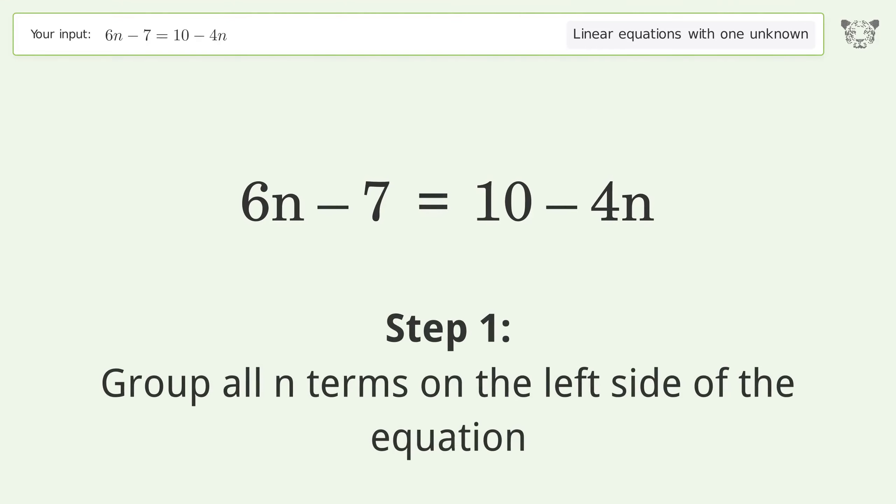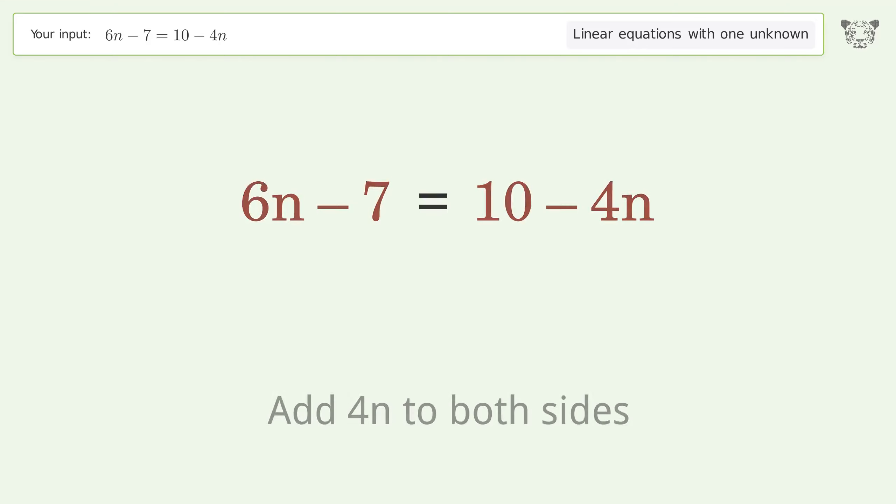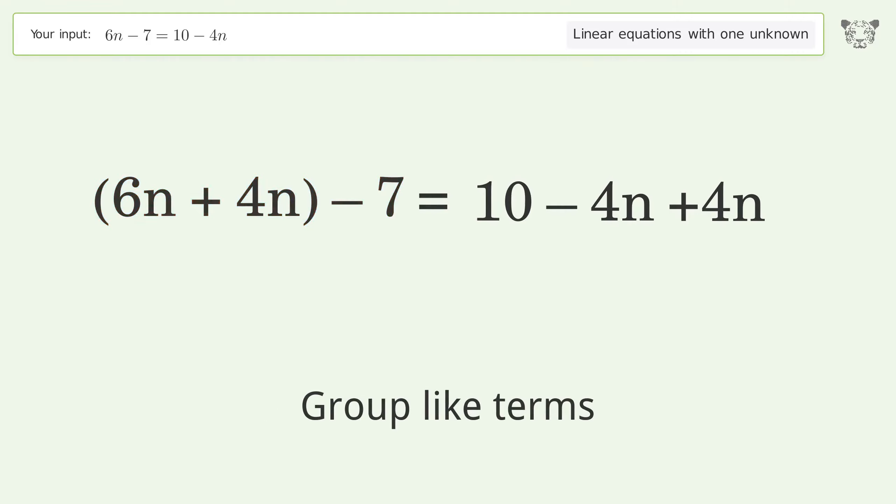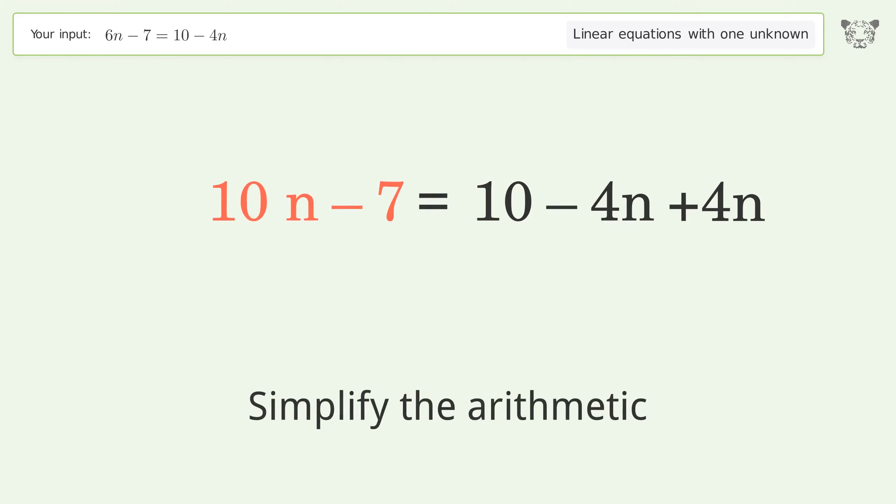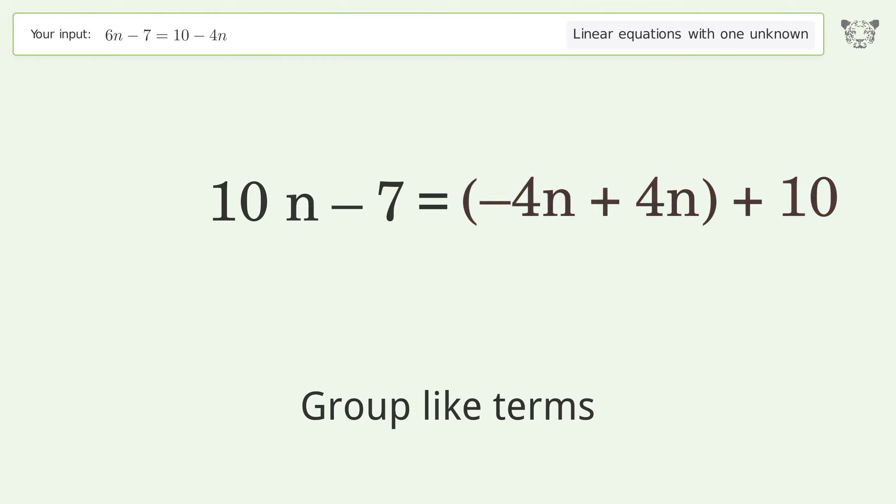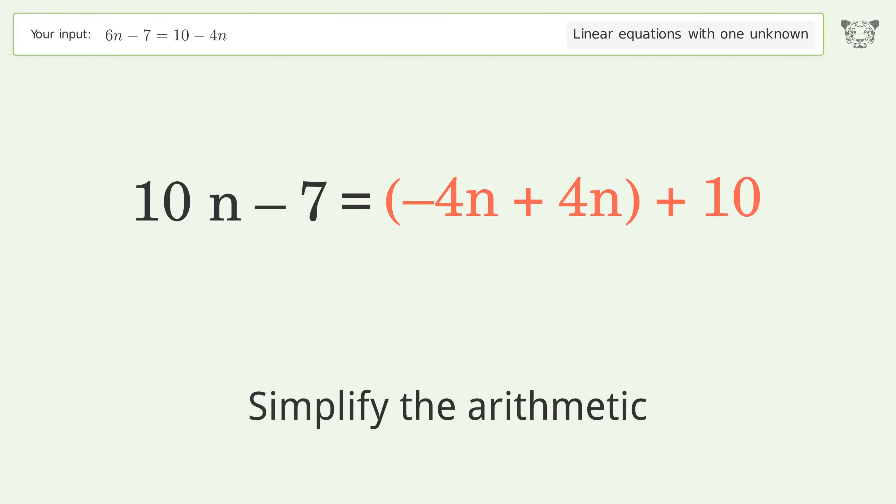Group all n terms on the left side of the equation. Add 4n to both sides. Group like terms and simplify the arithmetic.